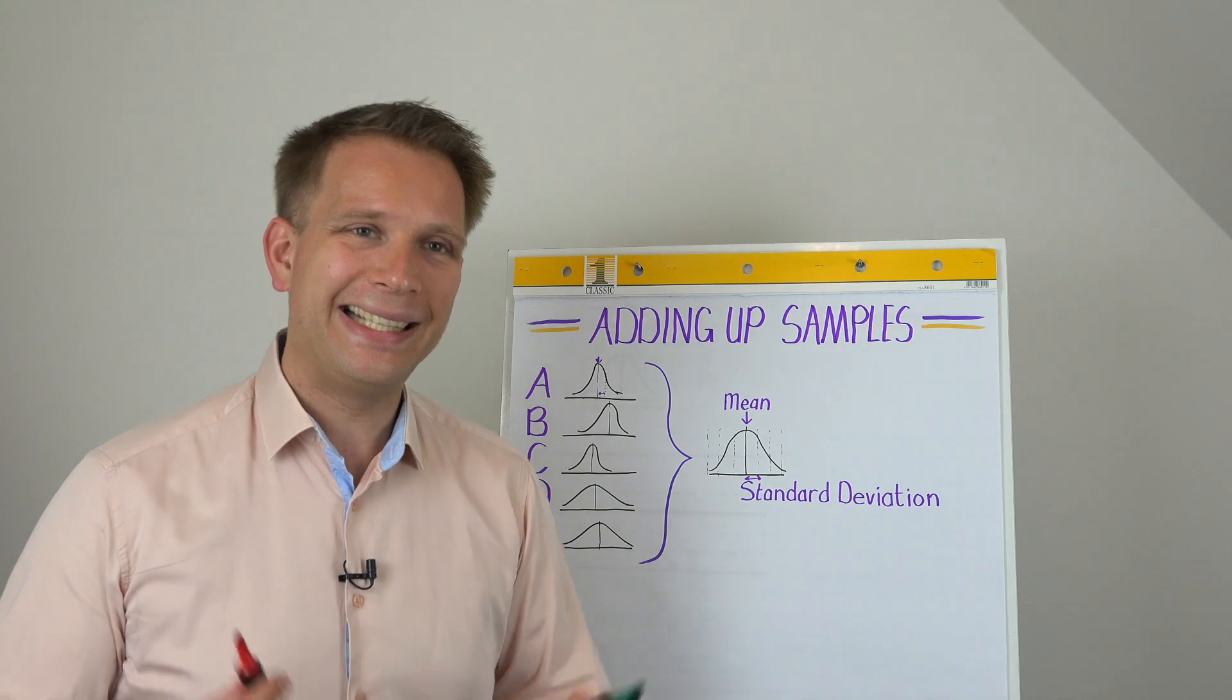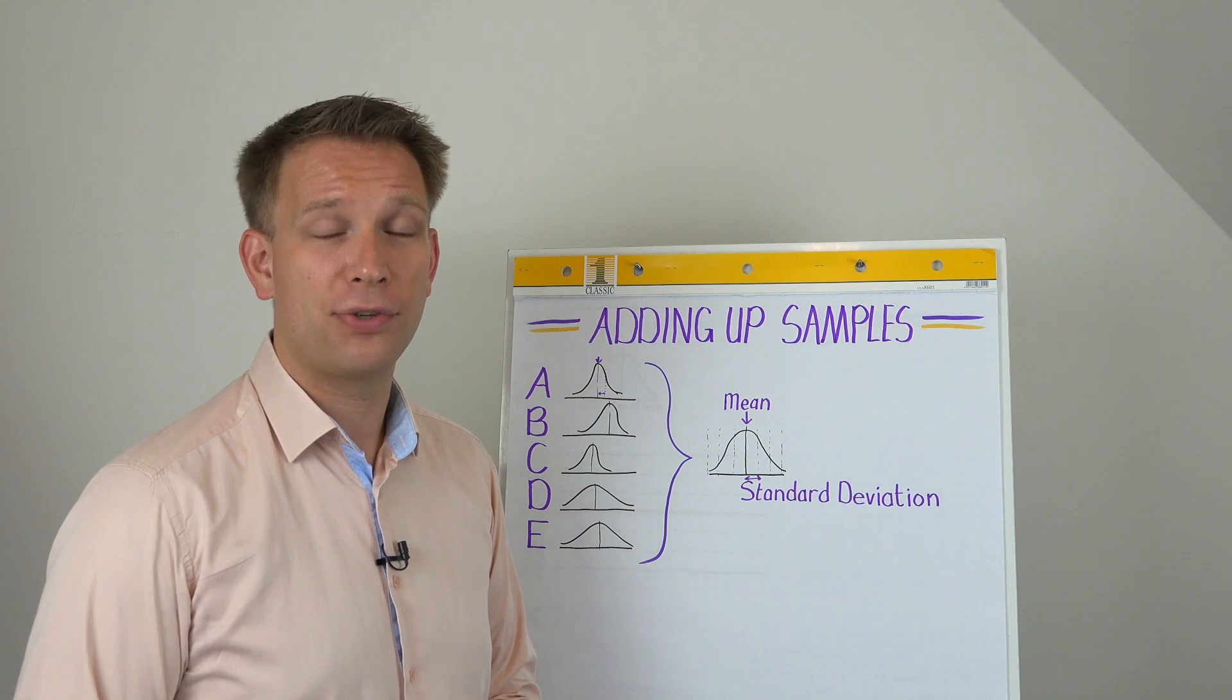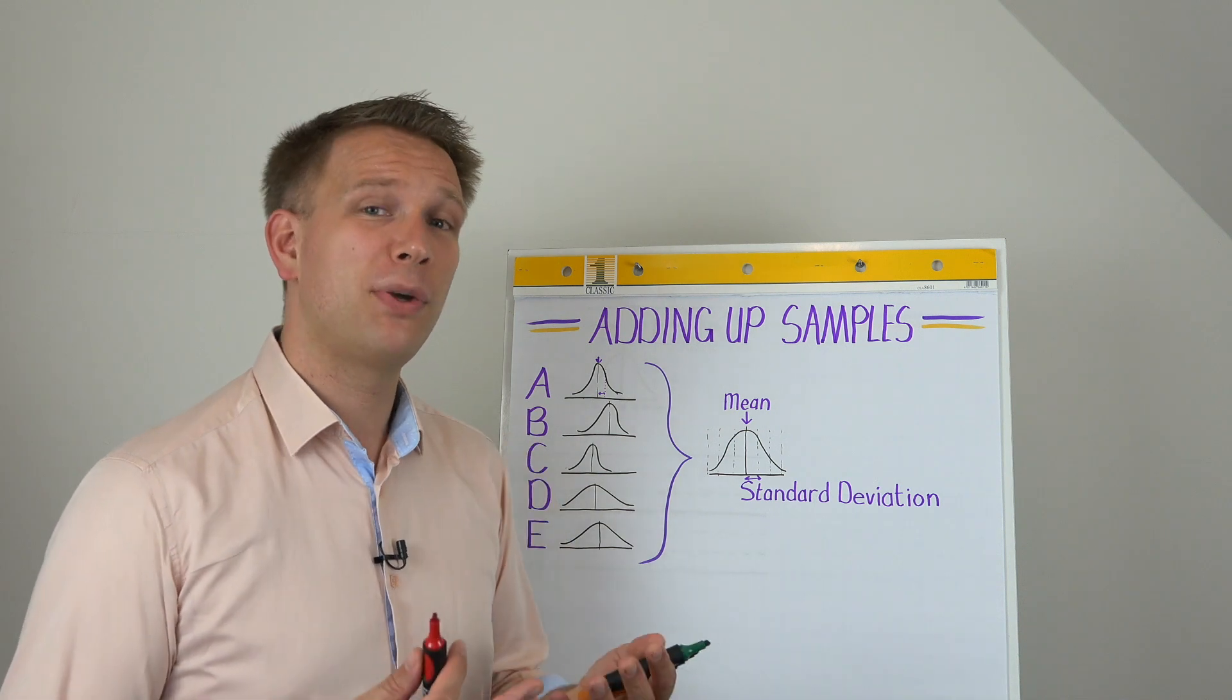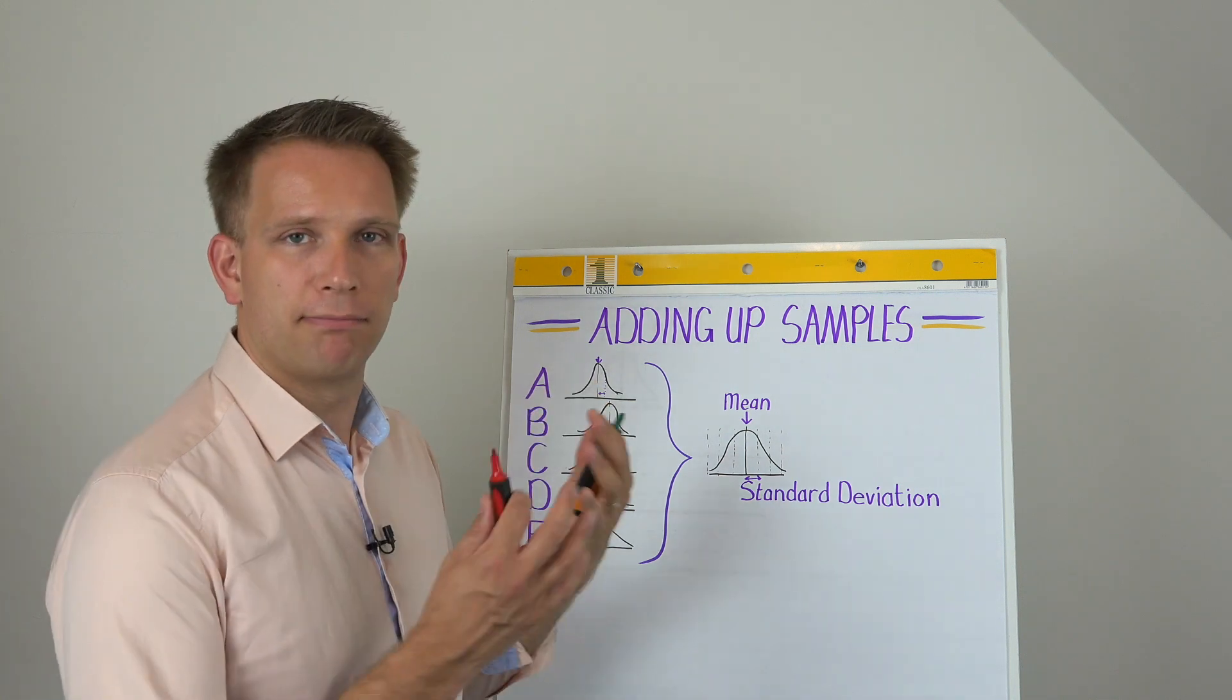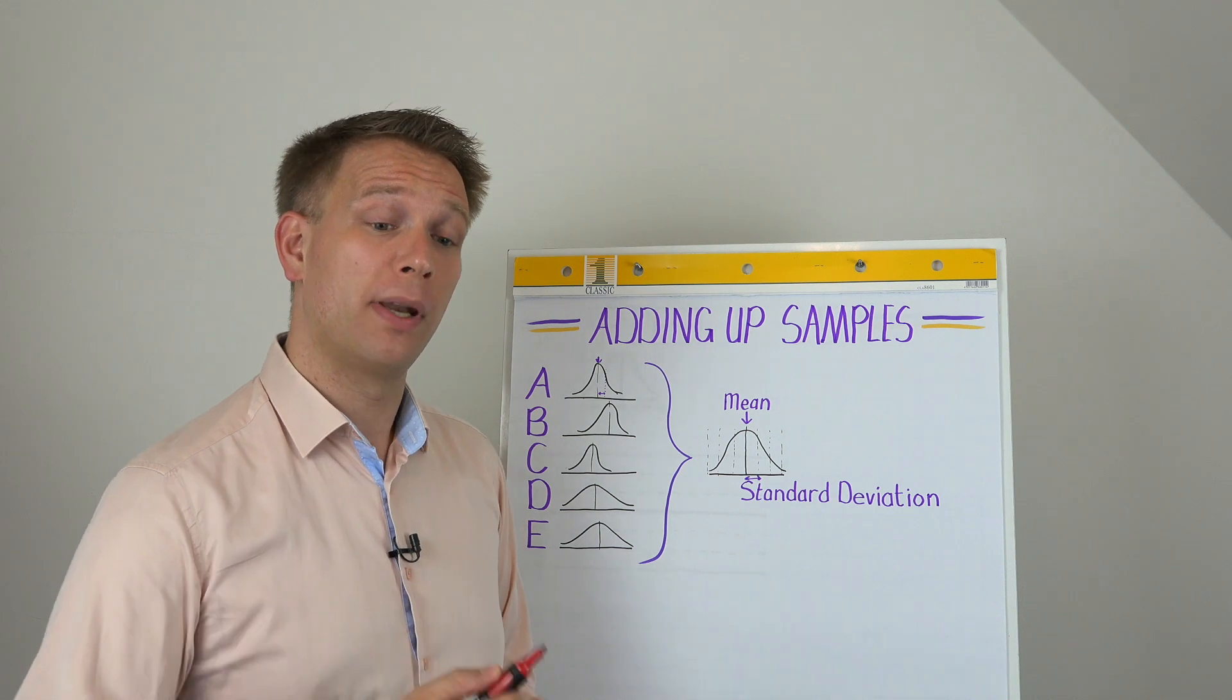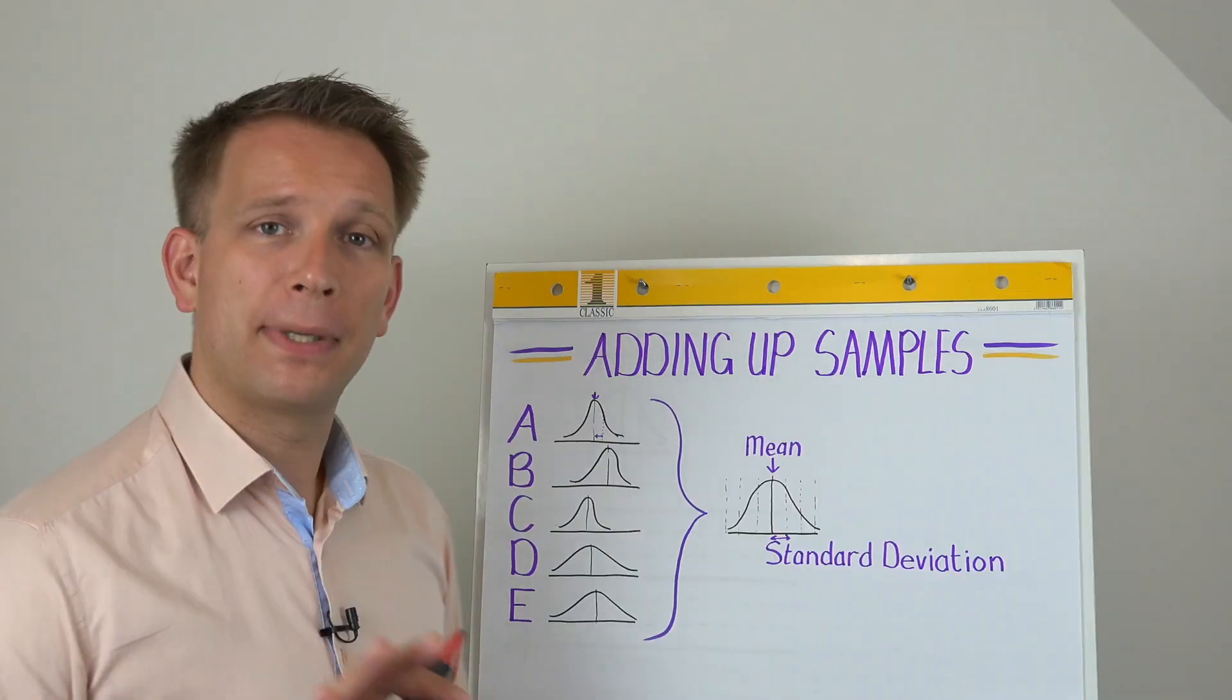Now as I said, the easiest way is if we have the underlying data. Simply filter the data and calculate the mean and the standard deviation for the whole data set. This is the easiest and most reliable method. But if you have batch records or production information that basically only states these parameters, so only the mean and the standard deviation, which is quite common in your registration systems that you might find in your organization, then there is a bit of a trick. But let's start with the mean.